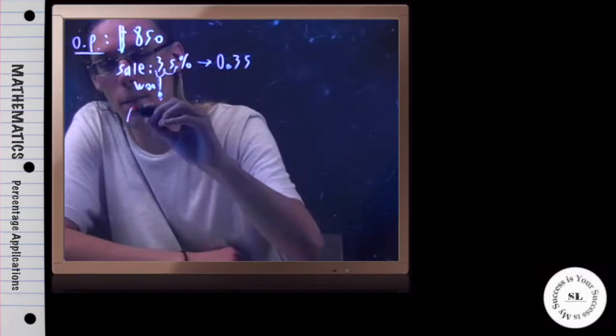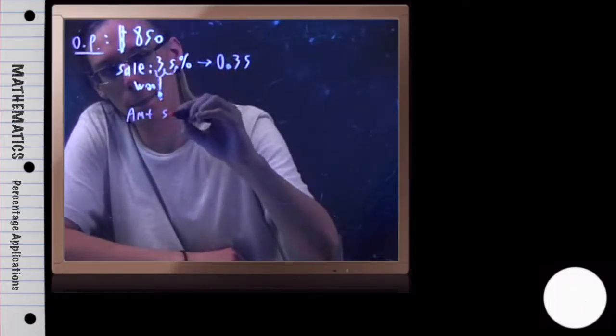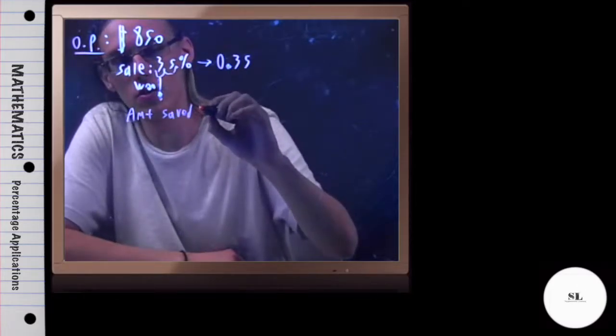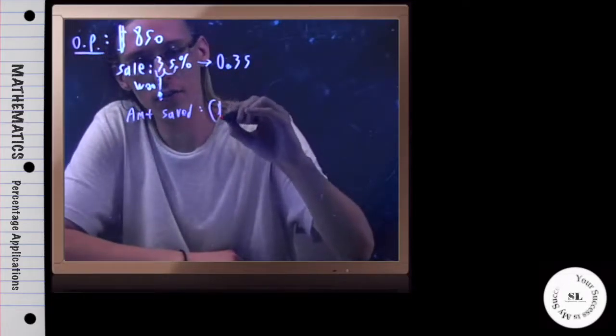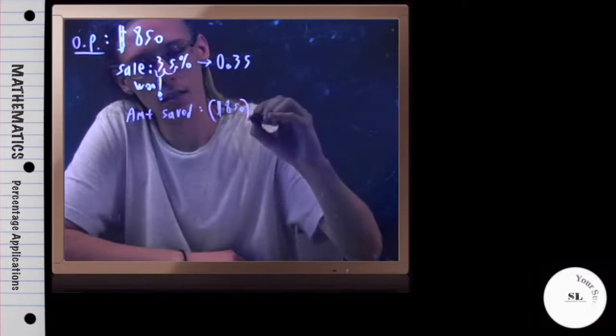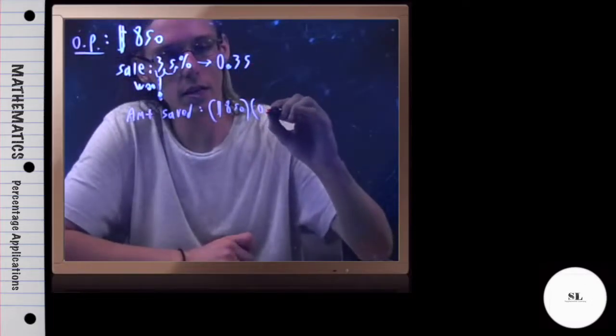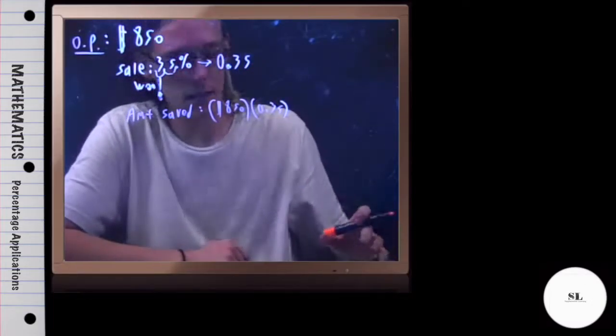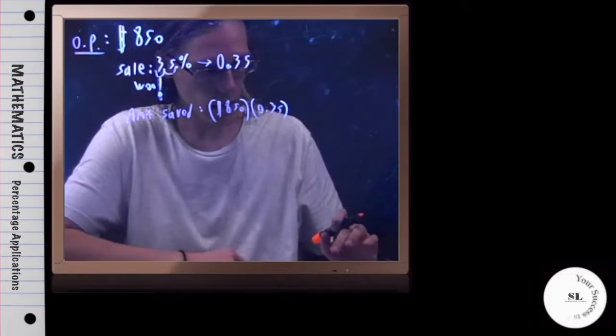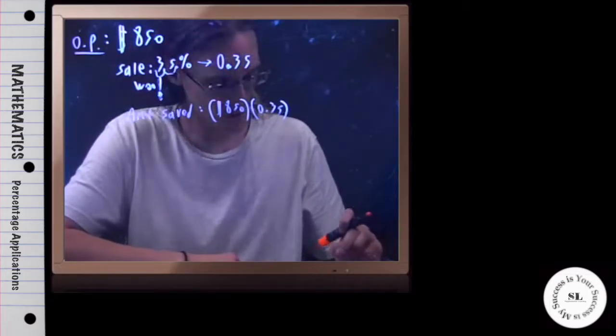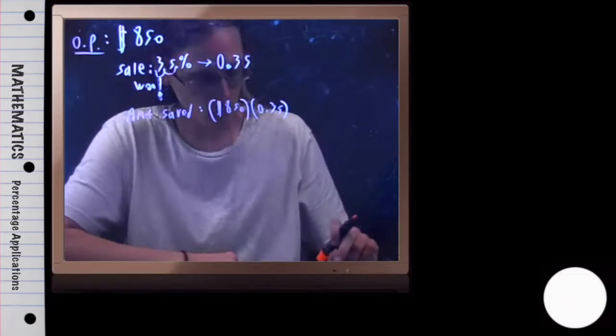And so to get the actual amount saved, we're going to do the original price of $850 times the sales percentage of .35. I'm going to check this in the calculator, 850 bucks, 35% of that, or in other words, times .35.